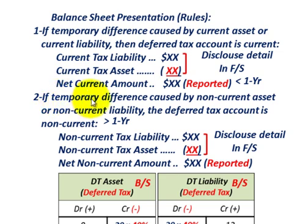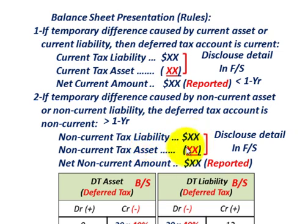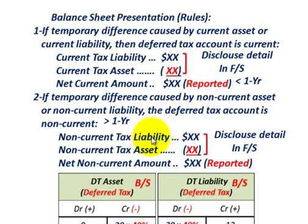Rule two: if the temporary difference is caused by a non-current asset or non-current liability, then the deferred tax account is non-current (greater than one year). Net all non-current tax liabilities against non-current tax assets to determine the net non-current amount to be reported. Disclose in detail in the financial statements what these non-current tax liabilities and assets are.